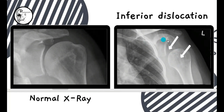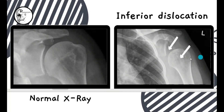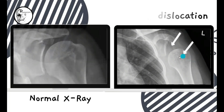Here you can see the glenoid cavity and the head of the humerus being separated, with a noticeable increase in joint space. Even the soft tissue outline has been flattened out below the acromion process. These are the typical signs of inferior dislocation of the shoulder joint.